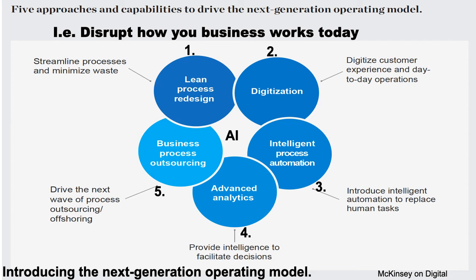McKinsey brought this model out to disrupt how your business works today. Because if you don't disrupt your own business, your competitor will disrupt you and you will go out of business. Stage one: look at the lean process design. Lean means with minimized waste. We do a bottom-up approach — starting with your objectives of marketing and sales, then issues, then the plan. We roll out those objectives, issues, and plan by department to come up with our corporate strategy. Number two: you've got to bring in digitization — digitize customer experience and day-to-day operations. Digitization, or AI — artificial intelligence — is so much quicker and more accurate.